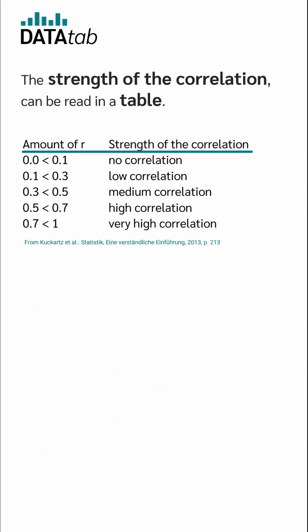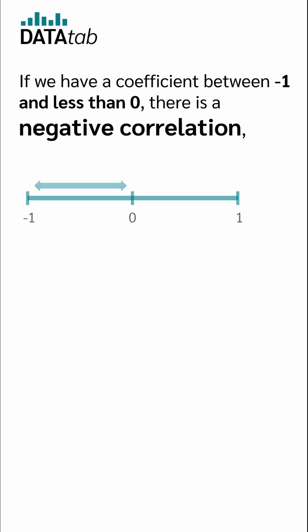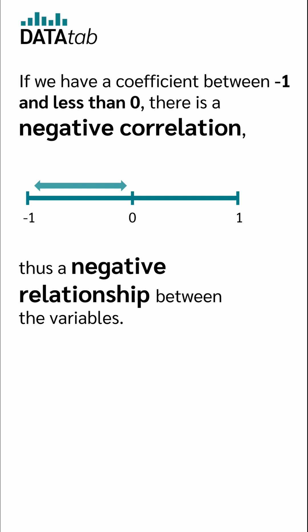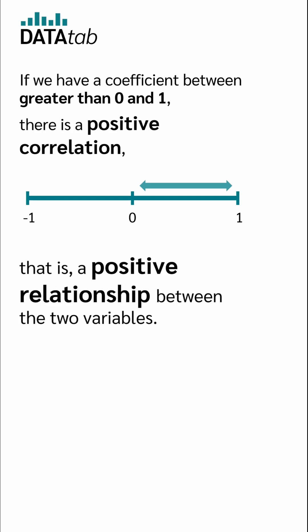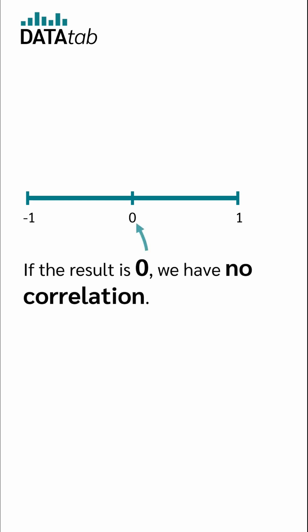The strength of the correlation can be read in a table. If we have a coefficient between minus 1 and less than 0, there is a negative correlation, thus a negative relationship between the variables. If we have a coefficient between greater than 0 and 1, there is a positive correlation, that is a positive relationship between the two variables. If the result is 0, we have no correlation.